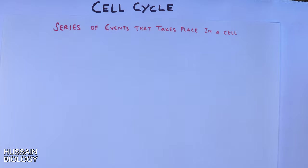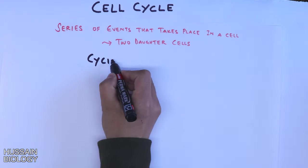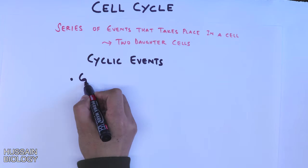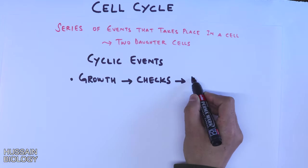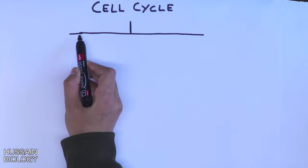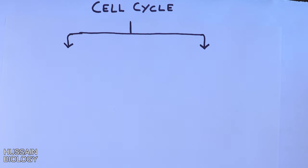These are cyclic events that start with growth, checks, and replication, and the cycle repeats again. Furthermore, we divide the cell cycle into two phases: interphase and the mitotic phase or M phase.